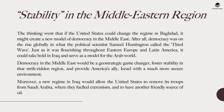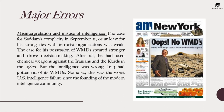Another factor was the idea of stability in the Middle East. The rationale was that if the US could change the regime in Baghdad, it might create a new model of democracy in the Arab world. Democracy was on the rise globally — what political scientist Samuel Huntington called the 'third wave' — flourishing throughout Eastern Europe and Latin America, and it could take hold in Iraq. A new regime in Iraq would also allow the US to remove its troops from Saudi Arabia and secure another friendly source of oil.